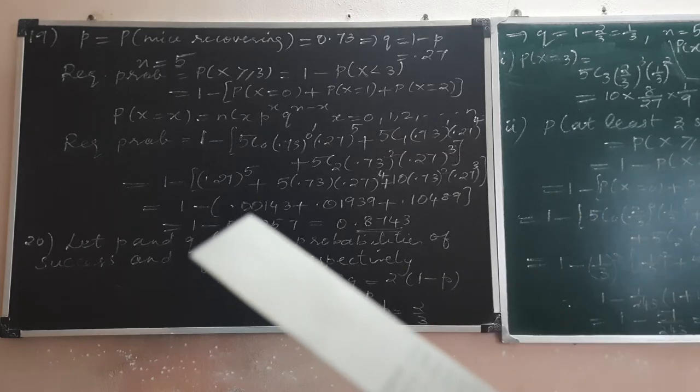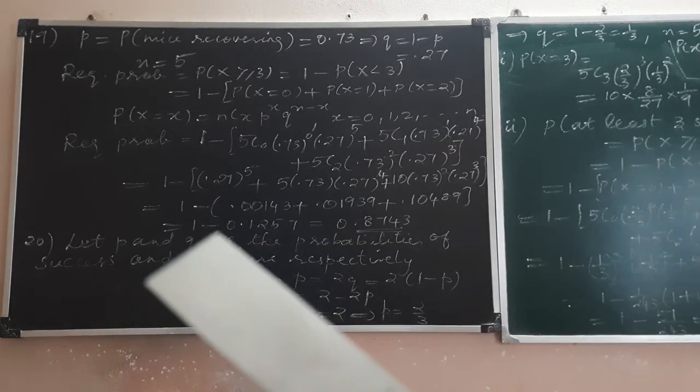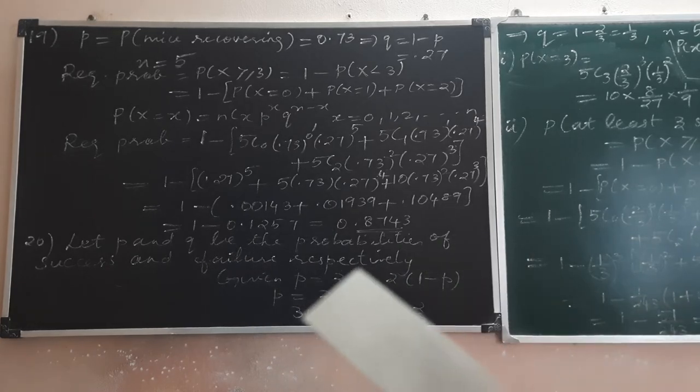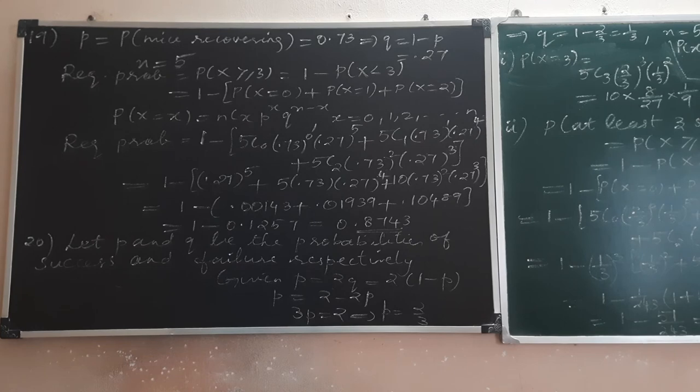Adding the terms in the bracket, that equals 0.1257. So 1 minus this equals 0.8743.